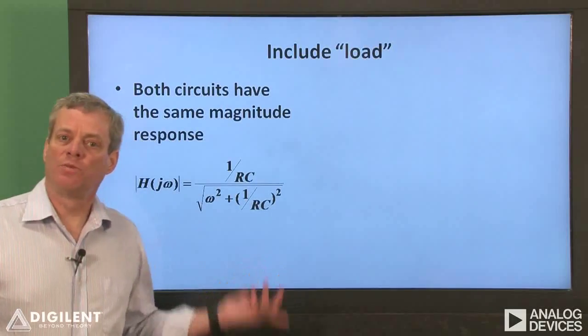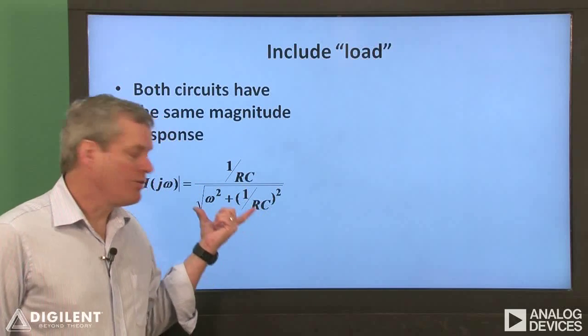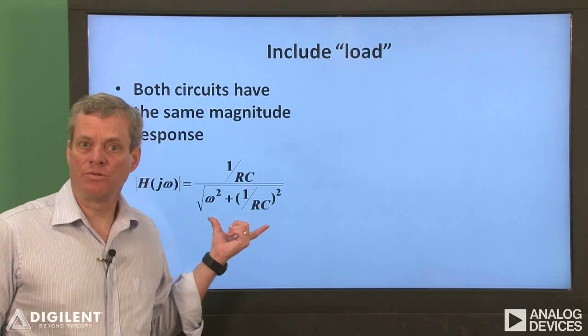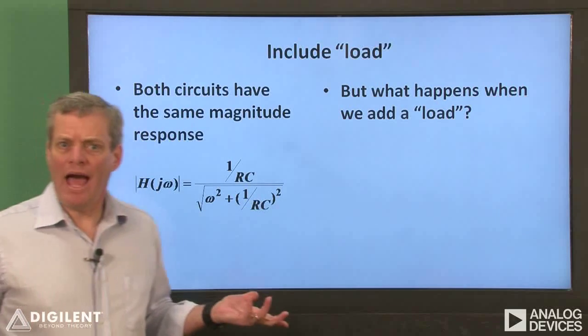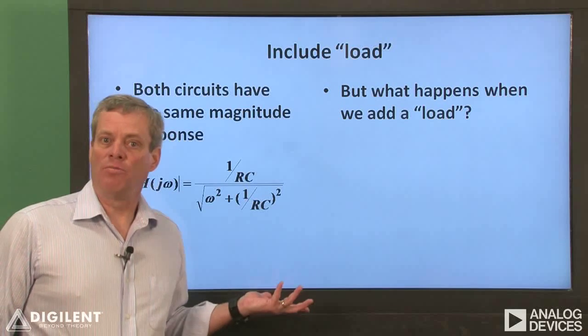Both of the circuits on the previous slide have the same magnitude response: 1 over rc divided by the square root of omega squared plus 1 over rc squared. However, what happens when we add a load to our circuit? For our load, we'll add a resistor to the output of the filter.